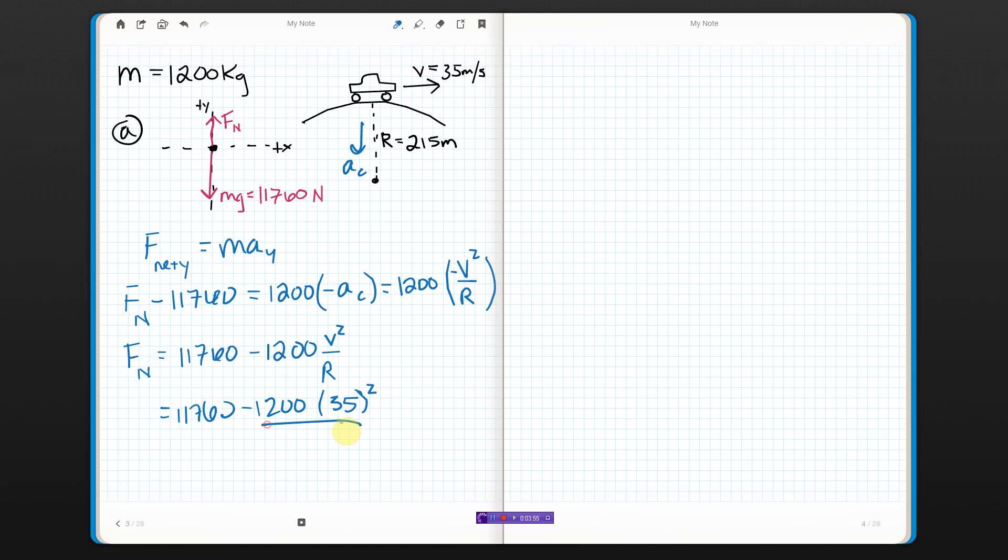Don't forget to square it, and r is 215. Put this in a calculator and we get that the normal force is 4922. I've only got really two sig figs here, so I'm gonna round to 4900 Newtons.